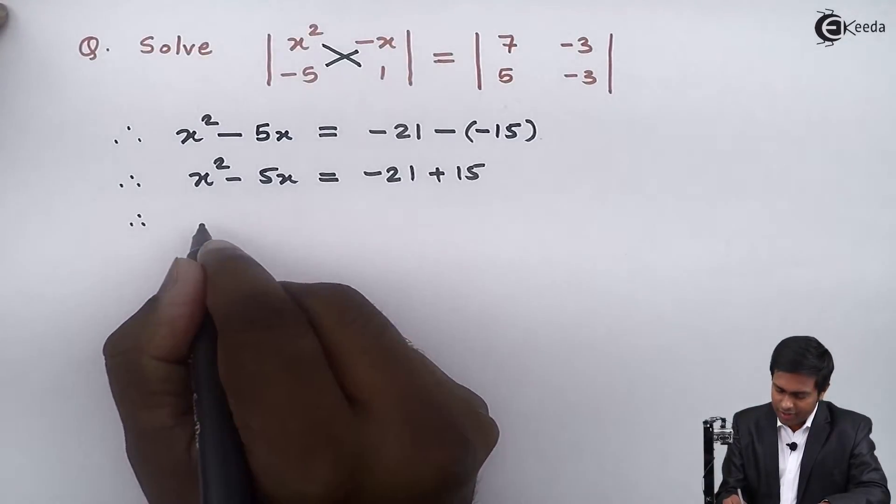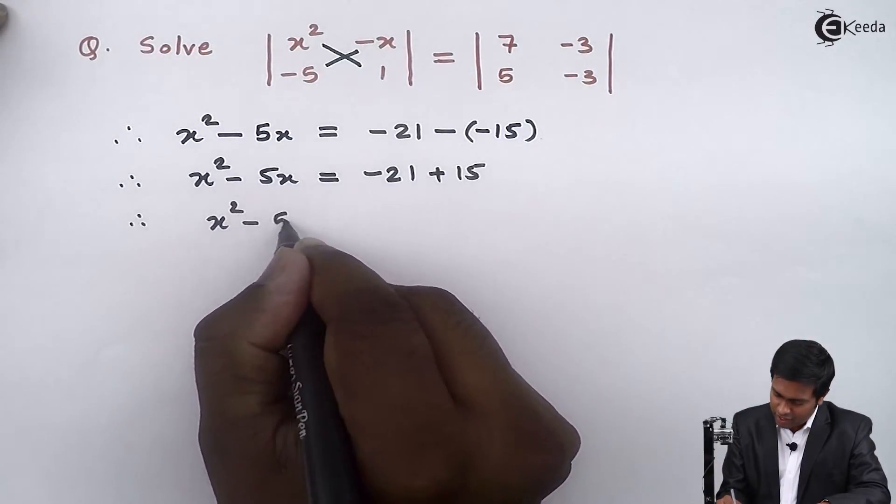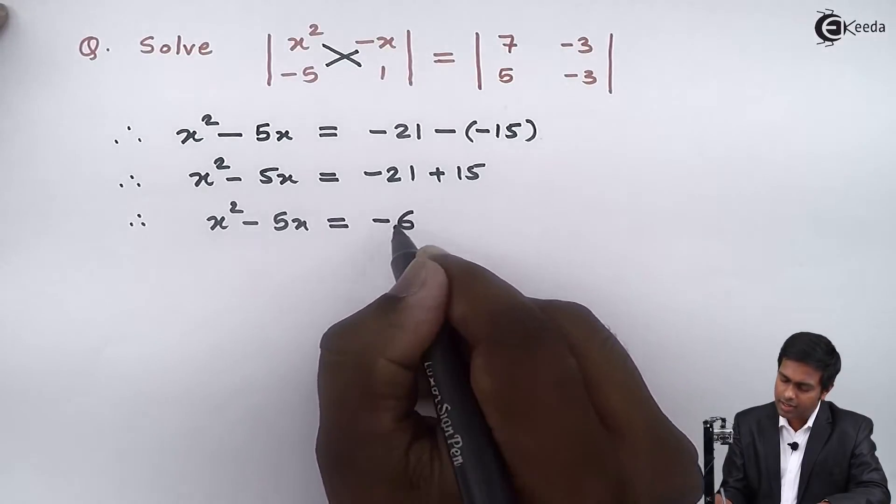after that we will get x square minus 5x equal to minus 21 plus 15. So therefore, x square minus 5x is equal to minus 6.